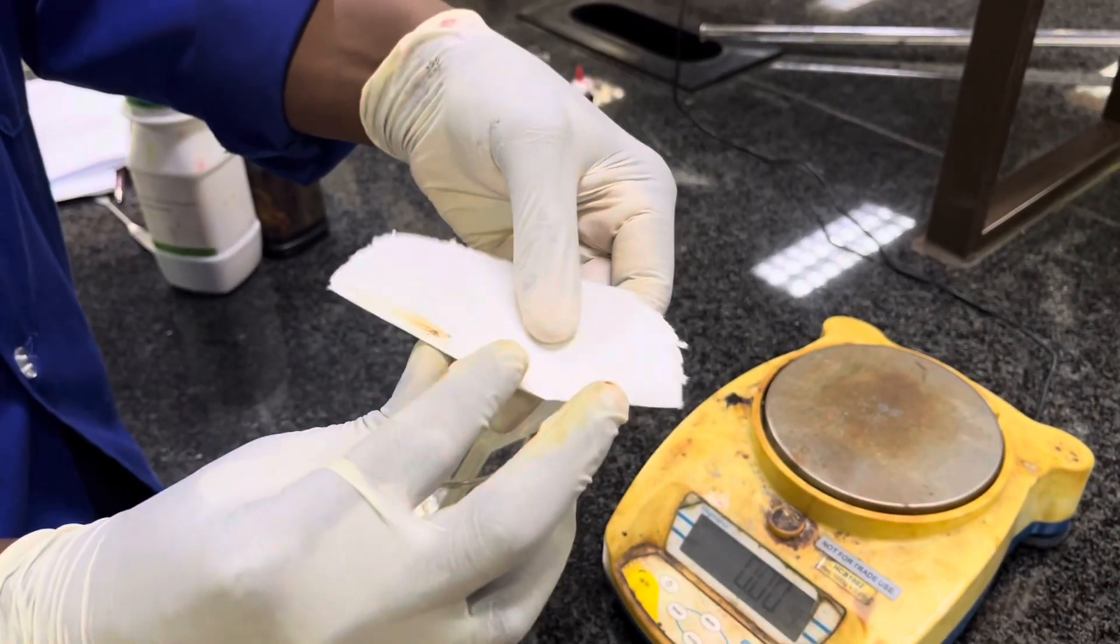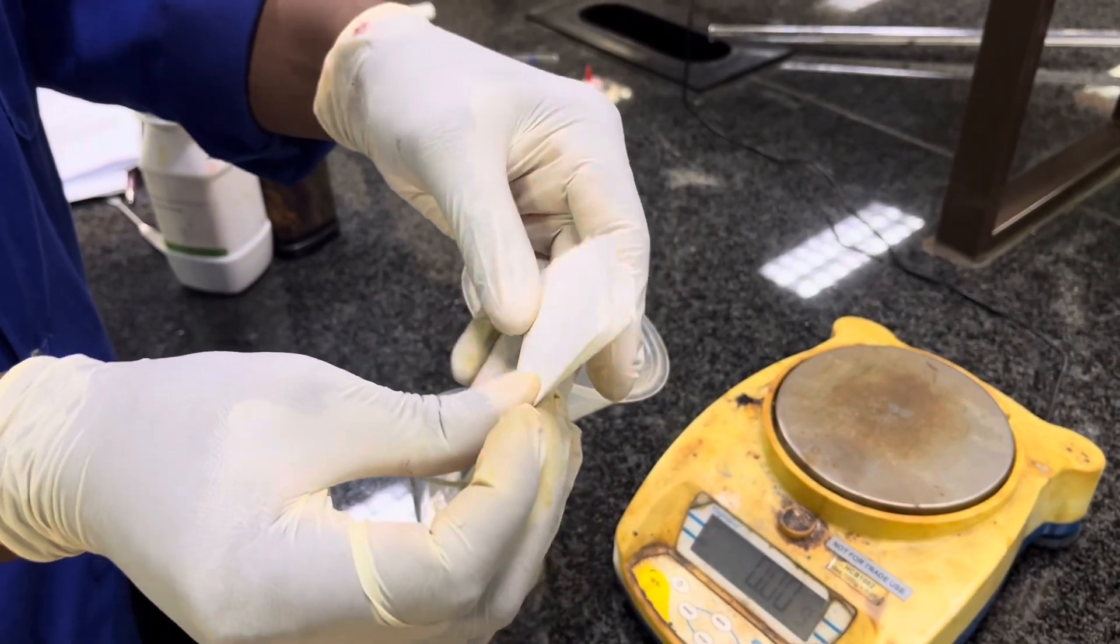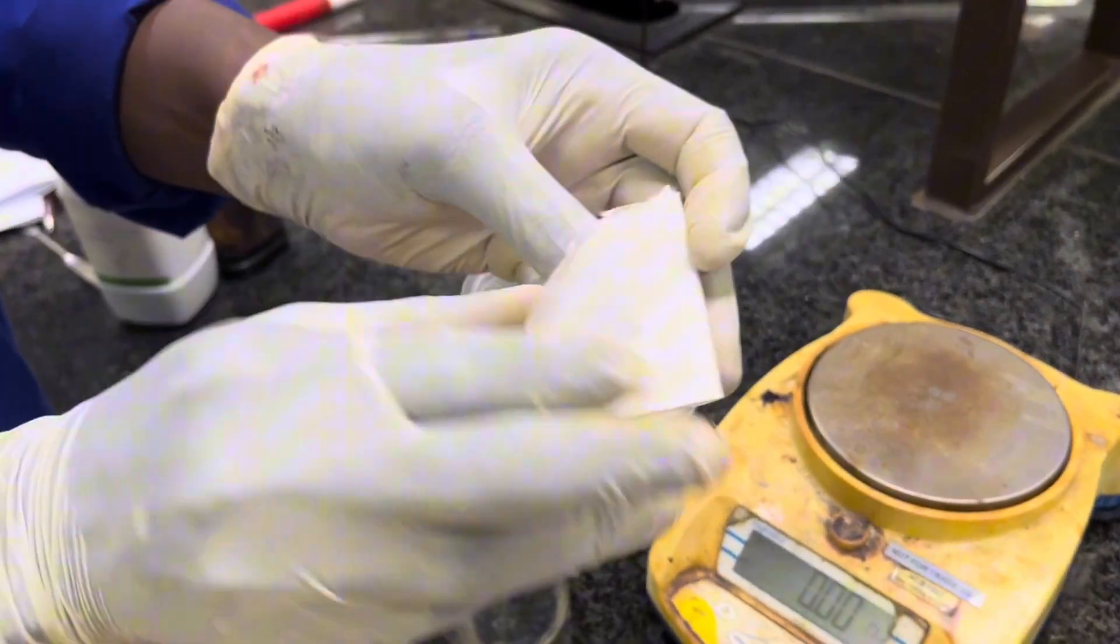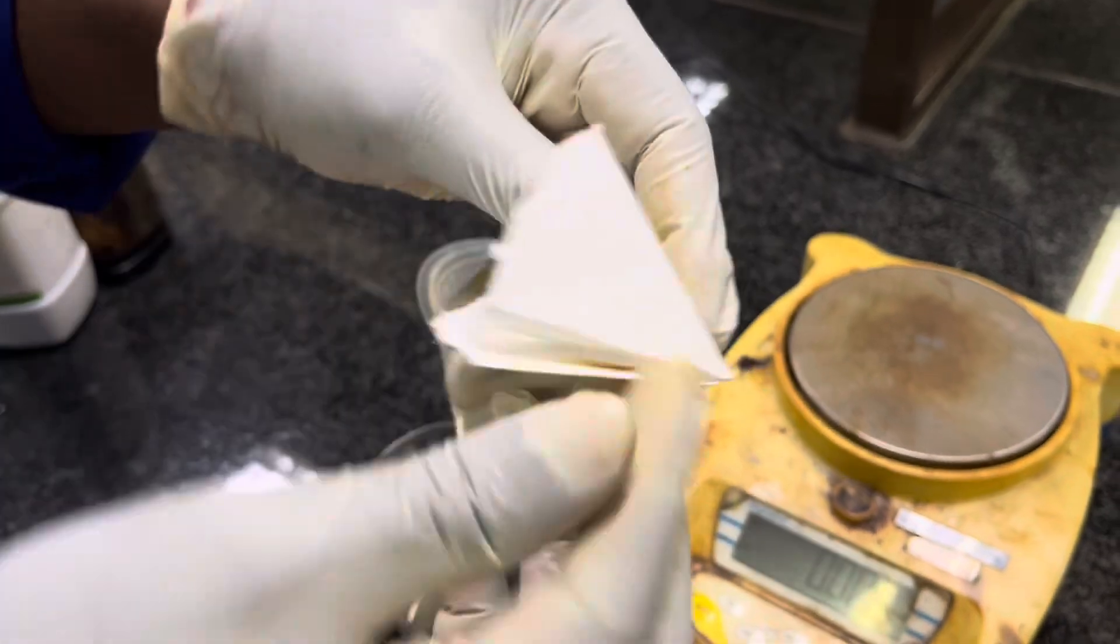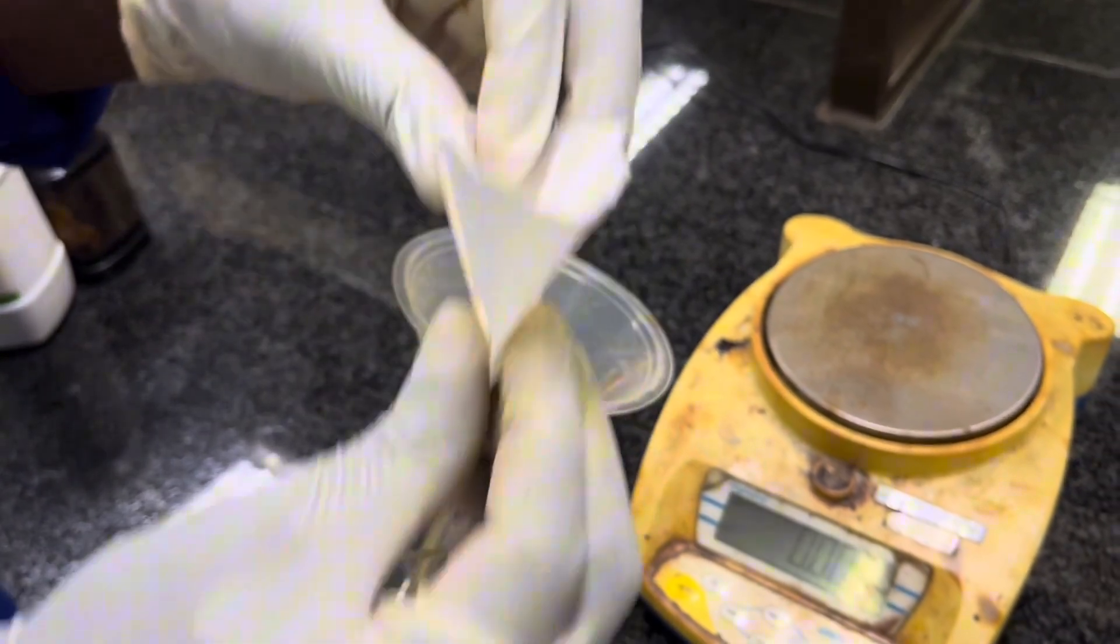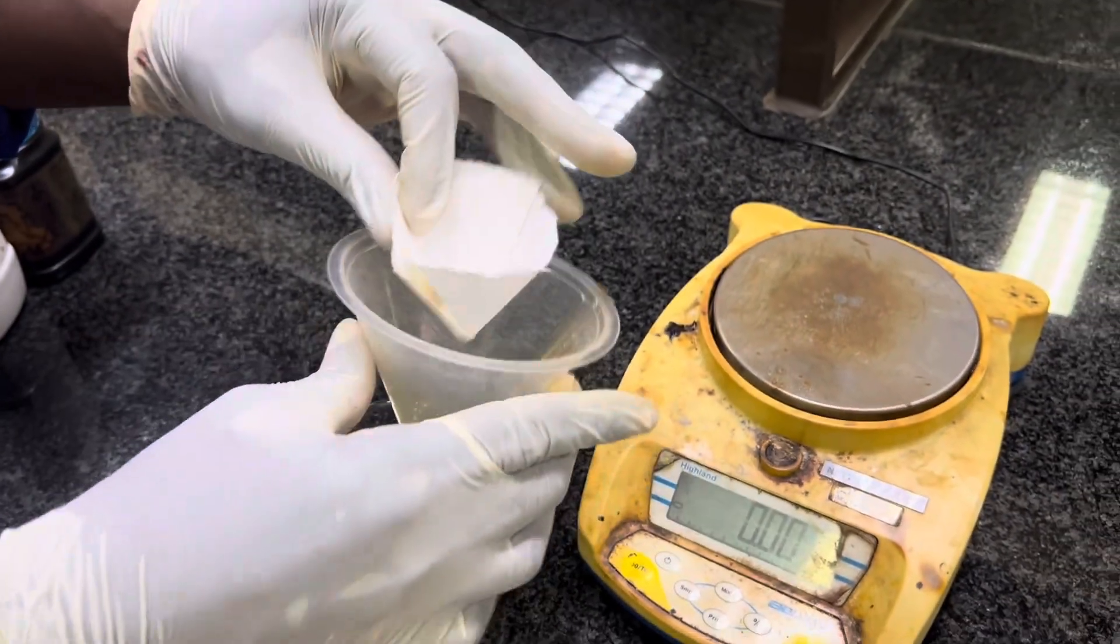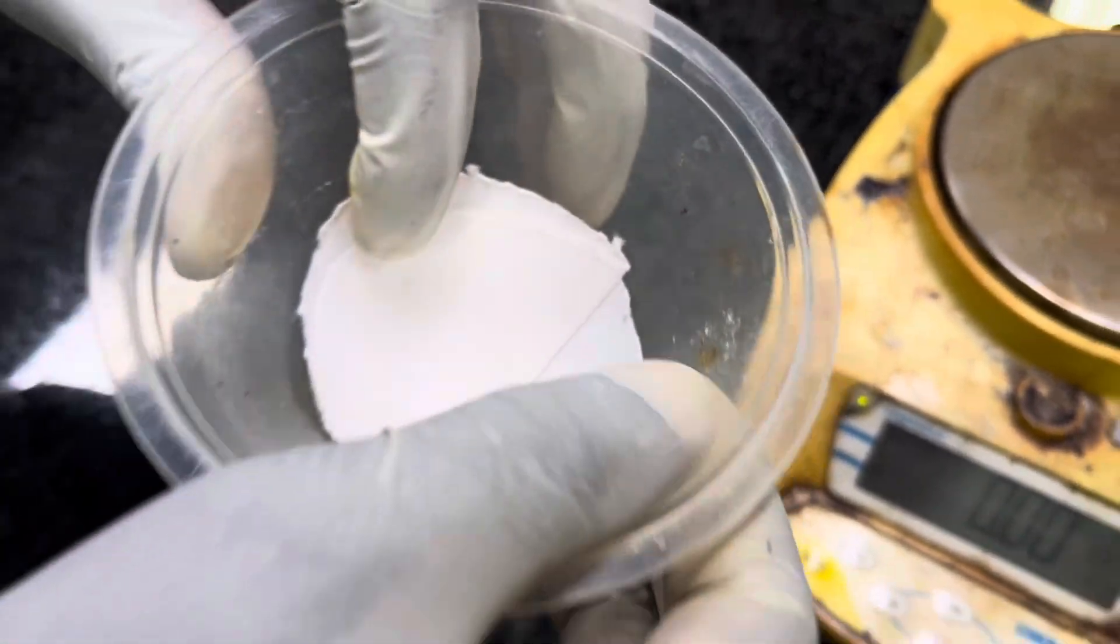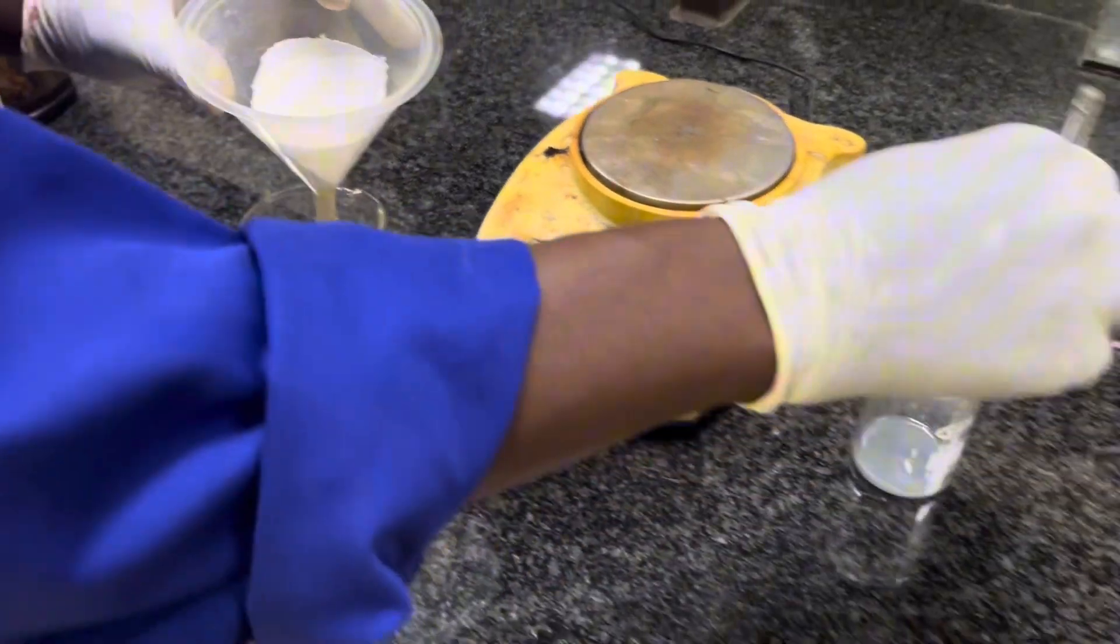From there, we're going to fold the filter paper. Let's fold it in half, then quarter it. From there, we can design it in a manner that it will look like a funnel. From there, we're going to put it on our table.